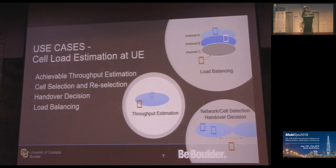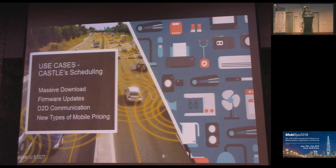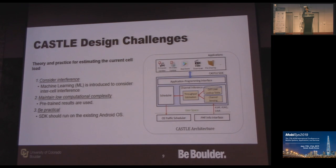If we know the cell load estimate at each UE, we can estimate the achievable channel throughput, perform cell selection and reselection, and do load balancing within the given scheduling. It could also be used for massive download, device communication, and smart-type pricing. The CASEL architecture uses its theoretical model to schedule the download process.